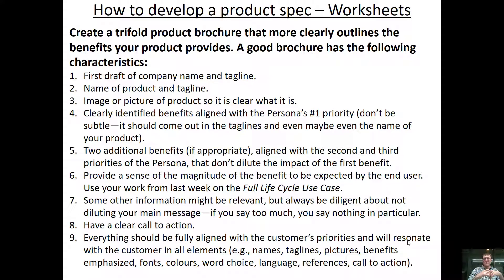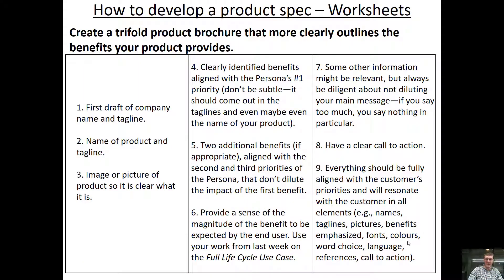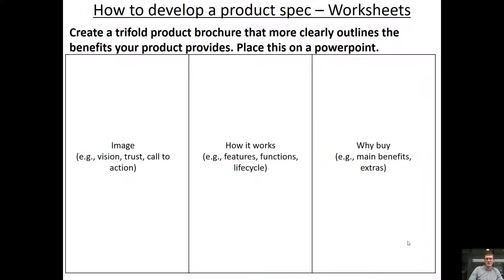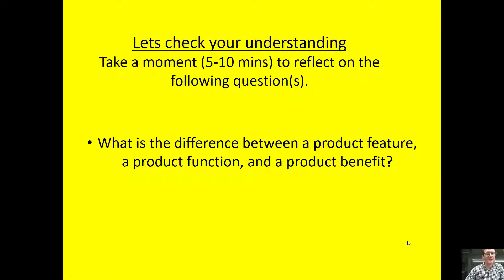There should also be some sort of call to action that excites the customer, and overall it should be fully aligned with your customer's priorities and resonate across all elements. I've essentially put these nine concepts into a three-column table which could represent a product brochure — but you're welcome to do it however you like. One approach: one panel has an image, another talks about how the product works — features, functions, life cycle — and the final panel is a big sell on why people should buy it.